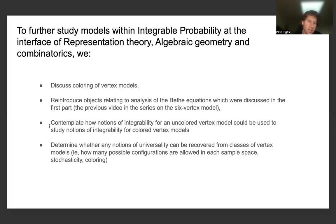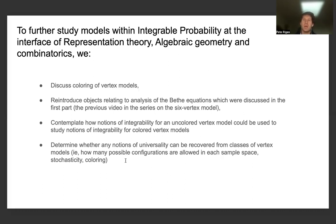Having all these ideas and concepts in mind from the previous bullet points helped us determine whether any notions of universality can be recovered from classes of vertex models — i.e., how many possible configurations are allowed in each sample space — as well as imposing conditions of stochasticity and coloring on the vertex models. This helps look at further connections demonstrating that the six-vertex model is a very significant model of mathematical physics, because depending upon different assumptions on basic objects used to define the probability measure, one can form several different types of interpretations between coloring, stochasticity, and different types of polynomials — relating to more geometric and algebraic areas of math than just discrete probability.